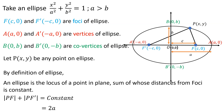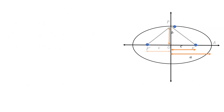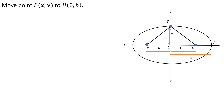Now we move ahead. What we will do is move this point P to the point B. We have moved the point P to the point B. We notice that we have two triangles, POF and POF'. These are right isosceles triangles, therefore PF and PF' are equal in length.